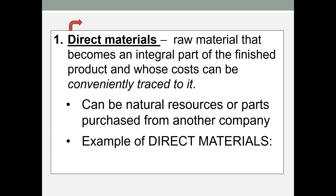Direct material becomes an integral part of the finished product, and the costs can be traced conveniently to that product. Wood for a desk manufacturer would be a direct material — I will abbreviate this as DM. Direct material can be natural resources such as wood, or it can simply be a part purchased from another company. If a manufacturer of elliptical machines purchases motors for those machines, that would be a direct material.